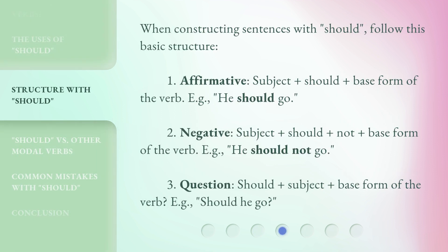When constructing sentences with should, follow this basic structure. 1. Affirmative: Subject + should + base form of the verb. E.g., 'He should go.' 2. Negative: Subject + should + not + base form of the verb. E.g., 'He should not go.' 3. Question: Should + subject + base form of the verb. E.g., 'Should he go?'